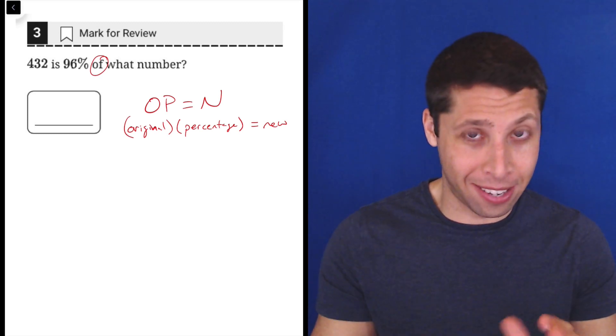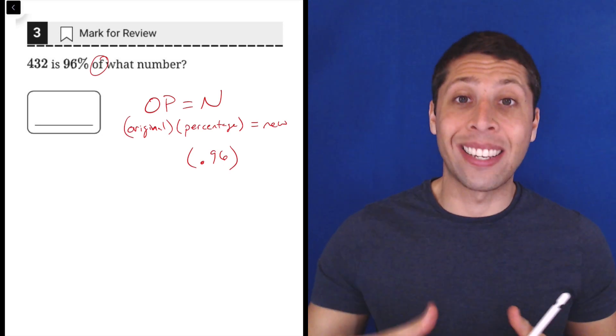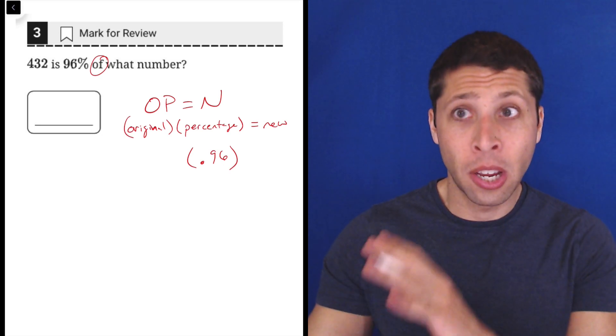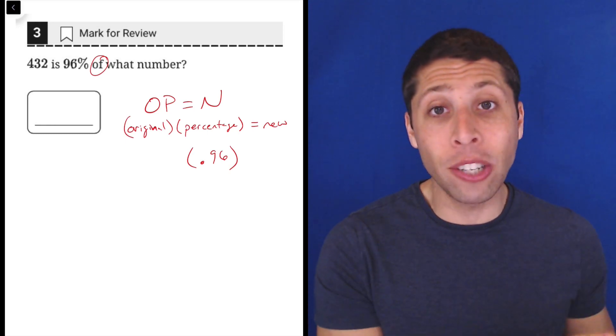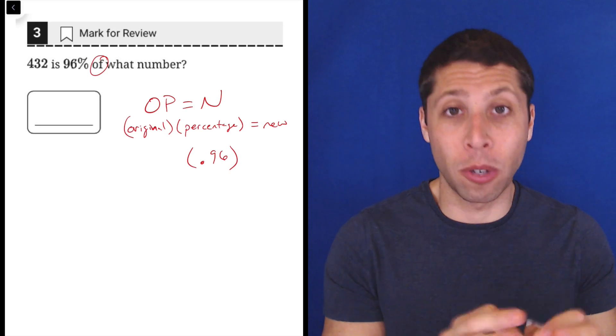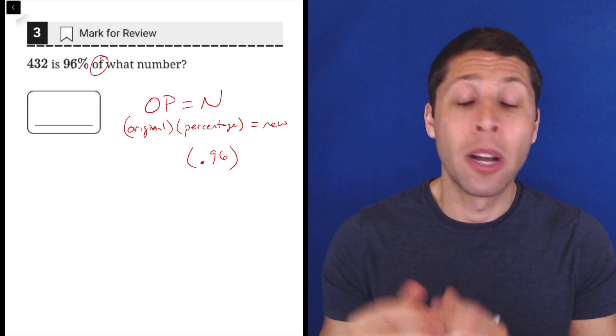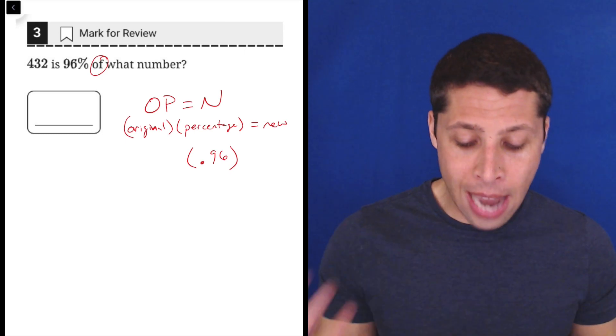So the 96%, that's easy, right? We're going to put that in for the P. The only thing is that's going to go in as a decimal. And this is just very common in math. When we talk about percentages, we use out of 100. But when we think about percentages in equations, most of the time we are going to use it as a decimal. So we've got to move that decimal point two spots. So 100 becomes 1, 96 becomes 0.96.